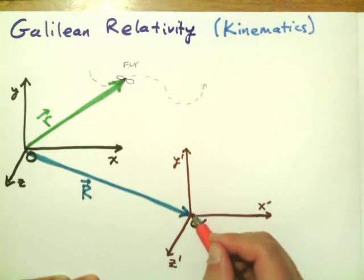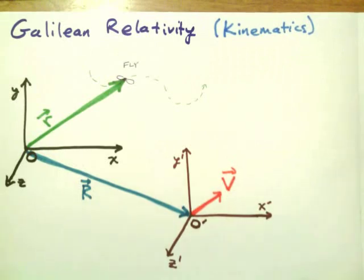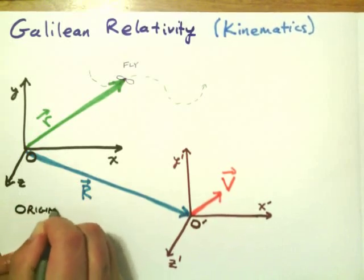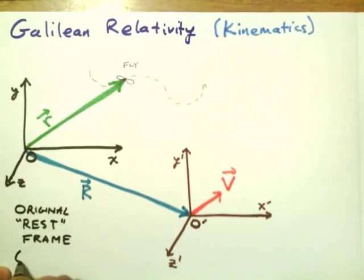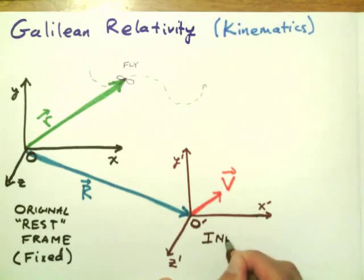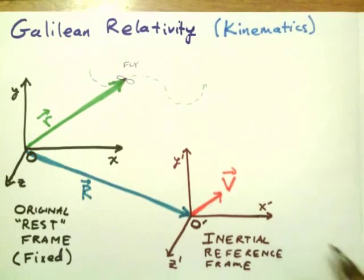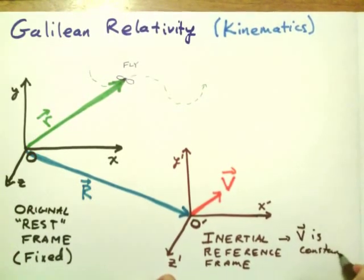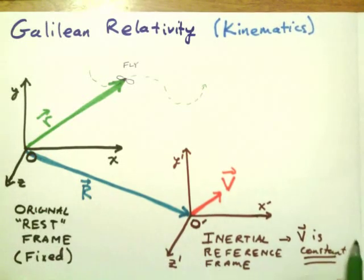I'm going to let this coordinate system move with some given velocity V — constant velocity. So I have the original reference frame, the rest frame, which is fixed. And then I have an inertial reference frame moving with constant fixed velocity V at some arbitrary direction and location. Since the velocity is constant, I can describe the position as a simple linear relationship between that velocity and time.